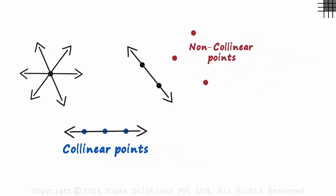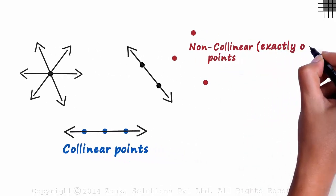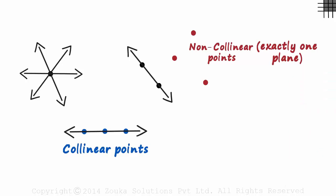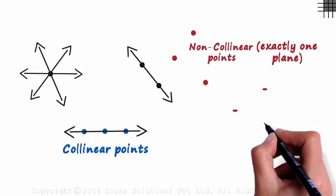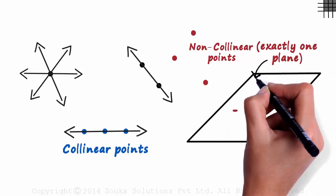Three non-collinear points form exactly one plane. If we have three non-collinear points like this, exactly one plane will pass through them.